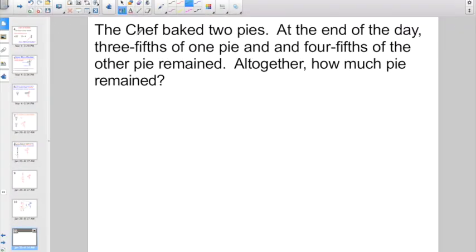Check out this one. The chef baked two pies. At the end of the day, 3 fifths of one pie and 4 fifths of the other pie remained. Here's your clue word. All together. How much pie remained?